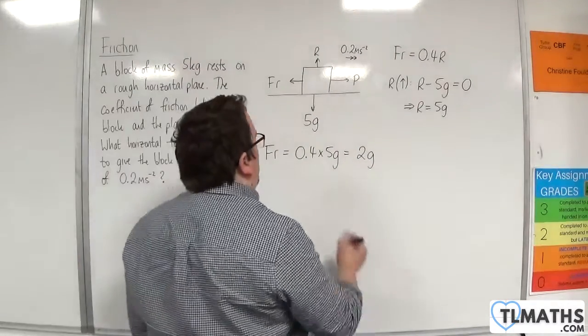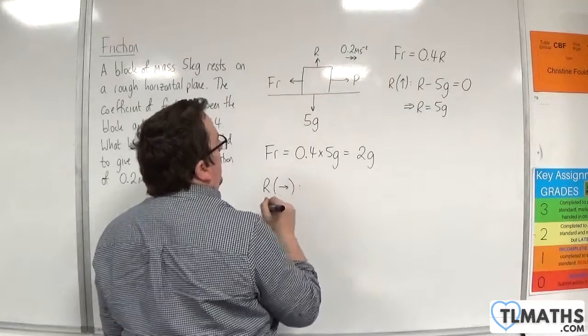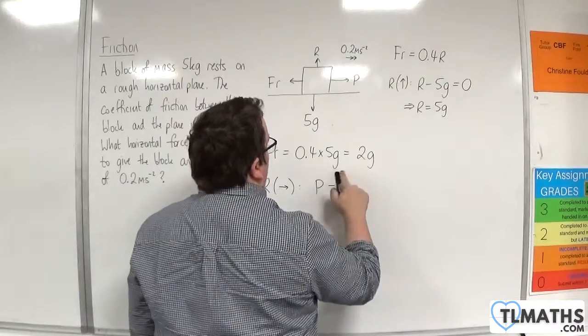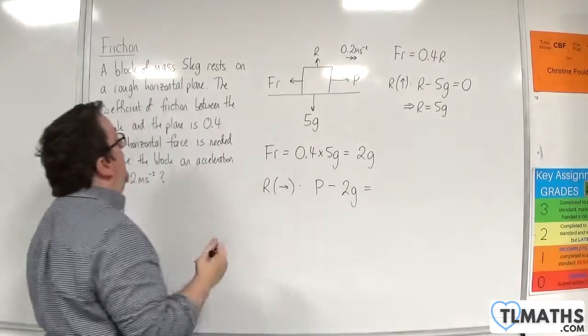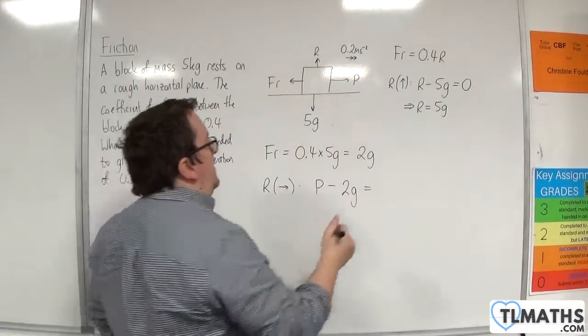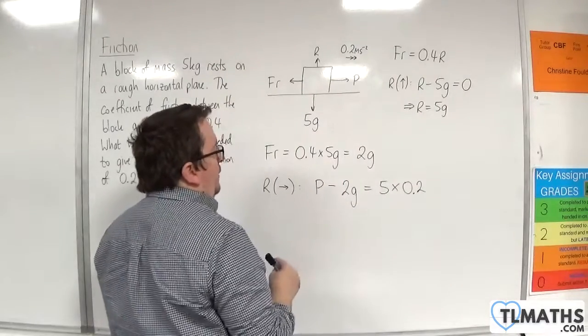Now if we resolve horizontally, taking to the right as positive, we would have P take away the friction, which is 2g, is equal to the mass, 5, times the acceleration, 0.2. So using Newton's second law.